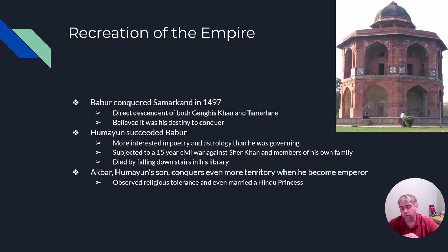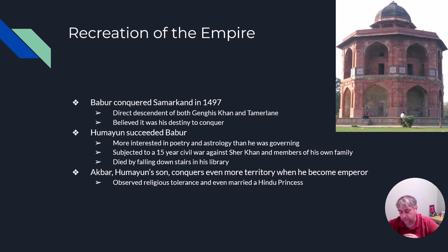Akbar observed religious tolerance and tried to end all the religious wars in his kingdom. He even married a Hindu princess in addition to Muslim women to bring people together, and by his death he had over 800 wives. Even so, the Muslim and Hindu princes underneath him resisted his attempts at conquest and at bringing people together.